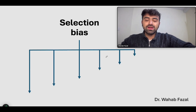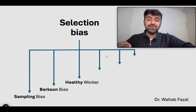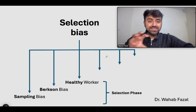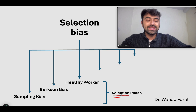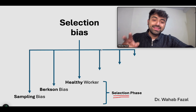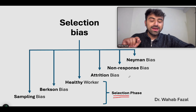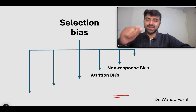Let's go back to our subtypes. We already did three of these. What's something that makes all of these similar? They all occur during the selection phase. Selection bias, on the other hand, can occur at every point during the study. This is where the next two biases — non-response bias and attrition bias — become relevant.